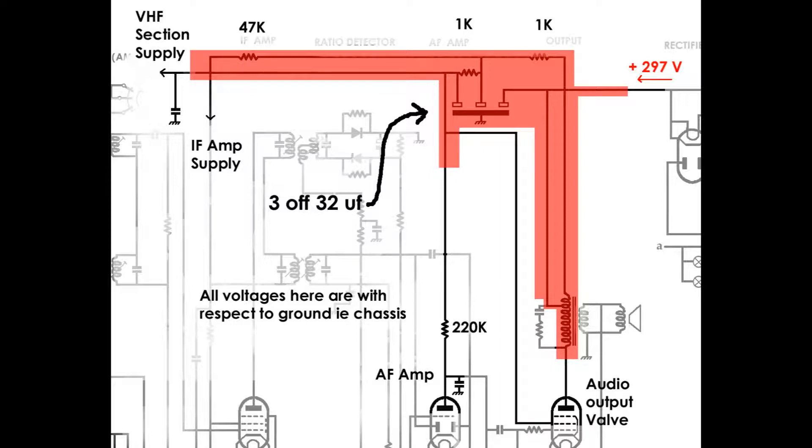On a couple of those supplies, you'll see the one going to the VHF section. On the left hand side of the page, there's a little capacitor there. That's a 0.01 microfarad capacitor. So that's just mopping up any RF, any radio frequency that may be coming from the VHF section. It won't be offering anything with regards smoothing, but it is bypassing RF coming in the other direction.